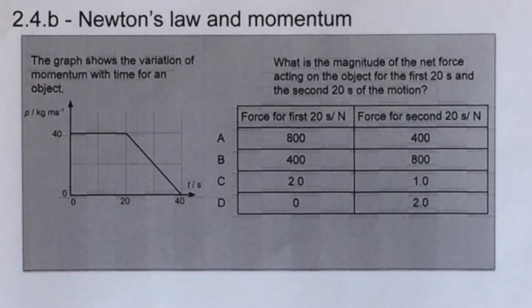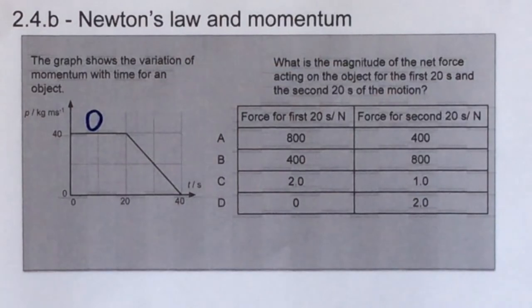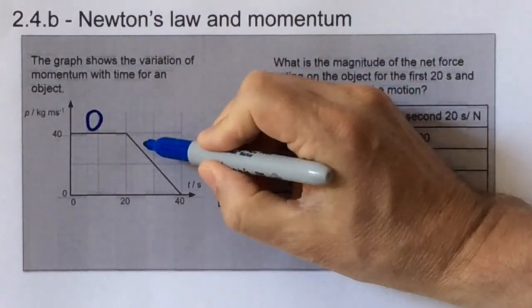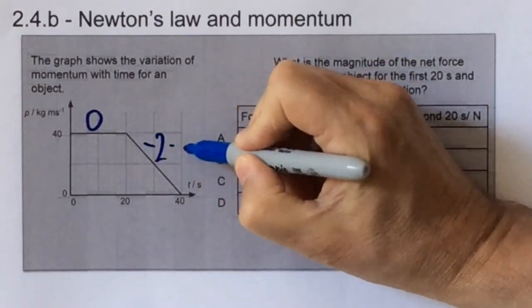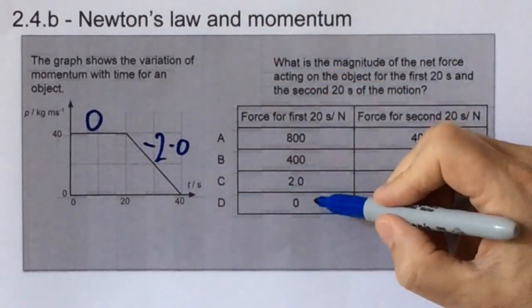This is a momentum time graph, and its gradient is the rate of change of momentum, which is the force. And we can see that when it's horizontal it would be zero, and then the next force is minus 2. And we're only asked to find the magnitude of the force, so we're looking at the positive numbers.